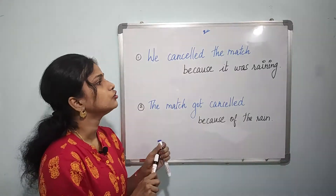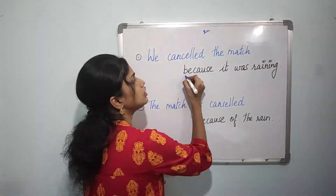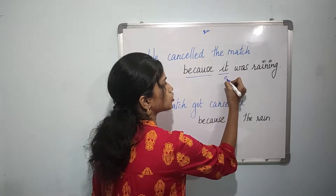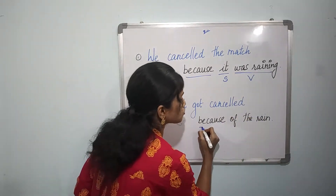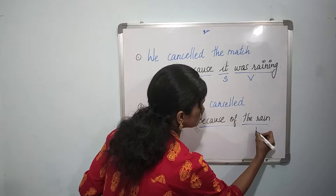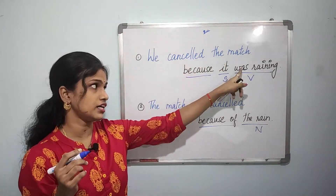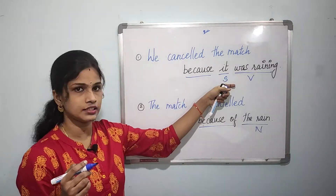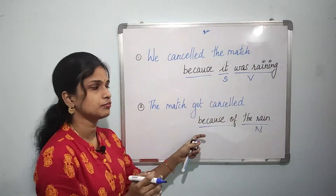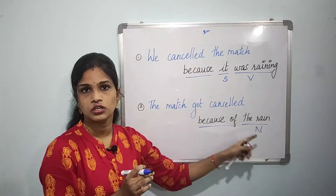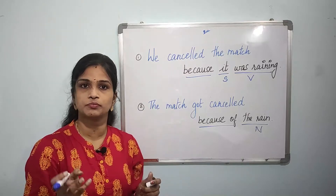So let's recap. 'Because' is followed by a subject and a verb — 'We cancelled the match because it was raining.' 'Because of' is followed by a noun — 'The match got cancelled because of the rain.' Both sentences have the same meaning; however, both 'because' and 'because of' are correct.